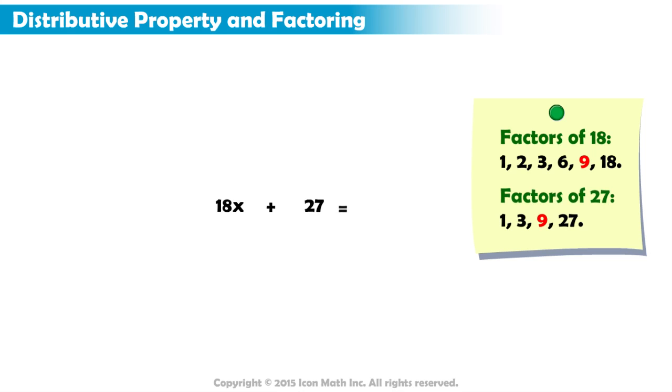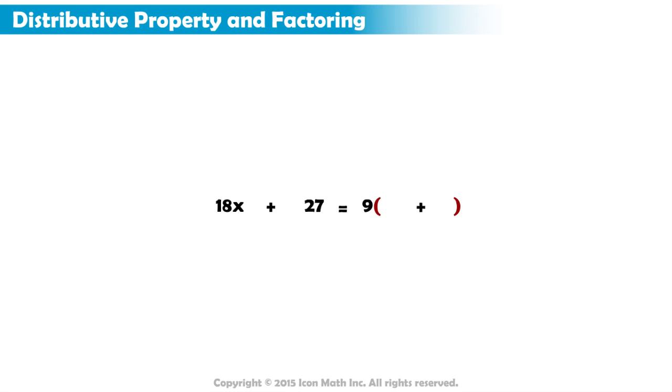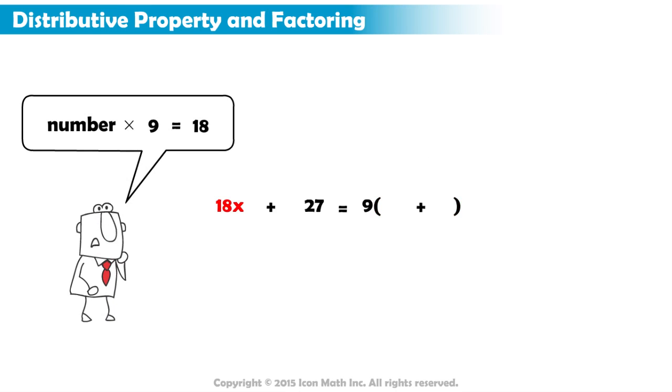If we factor a 9 out of the expression, we must place it outside of the parentheses. To determine what goes inside the parentheses, we ask ourselves what number multiplied by 9 would equal 18. 2 times 9 equals 18. So, 2x times 9 equals 18x. 2x is one of our addends inside the parentheses.